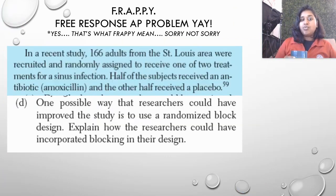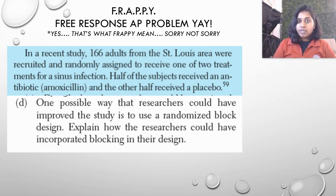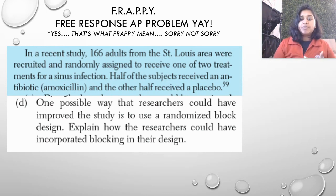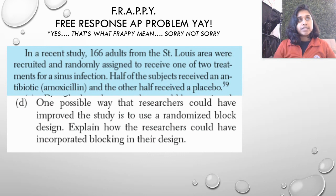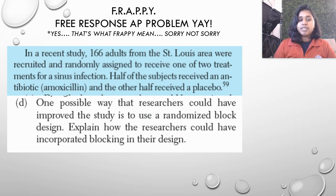Final question D: one possible way that researchers could have improved their study is to use a randomized block design. You might have to go back and check an image or the textbook — what is randomized block design? You could have Googled it. Explain how researchers could have incorporated blocking in their design. I recommend looking at images because people have posted really good visual breakdowns of what randomized block design looks like.